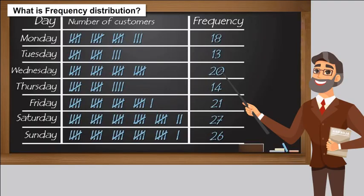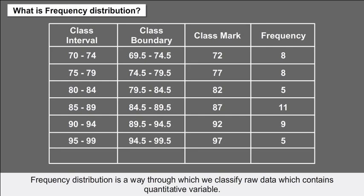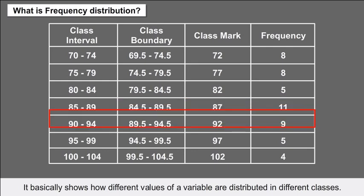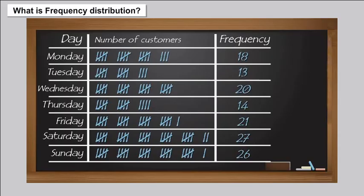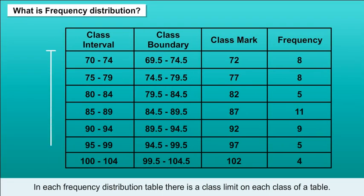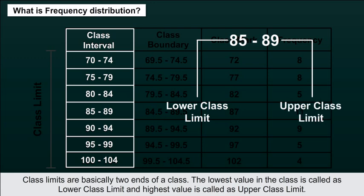Frequency distribution: Frequency distribution is a way through which we classify raw data containing a quantitative variable. It basically shows how different values of a variable are distributed in different classes. In each frequency distribution table, there is a class limit on each class. Class limits are the two ends of a class — the lowest value is the lower class limit and the highest value is the upper class limit.